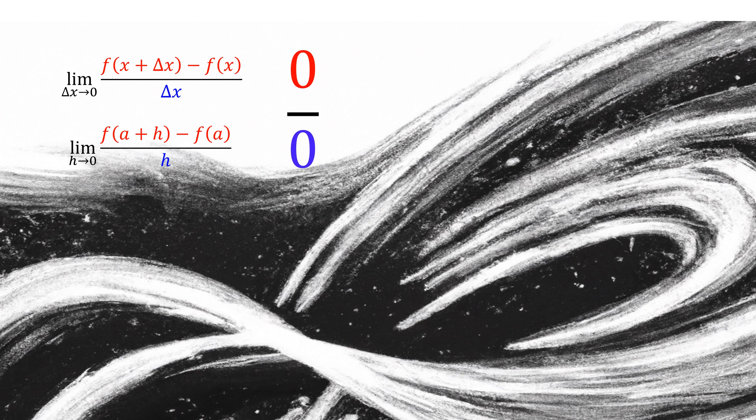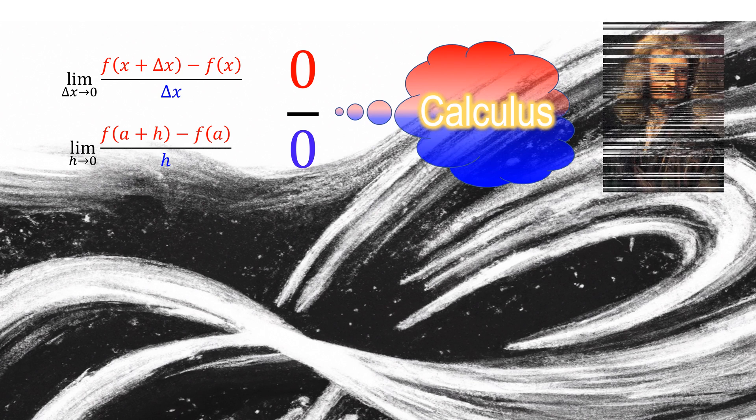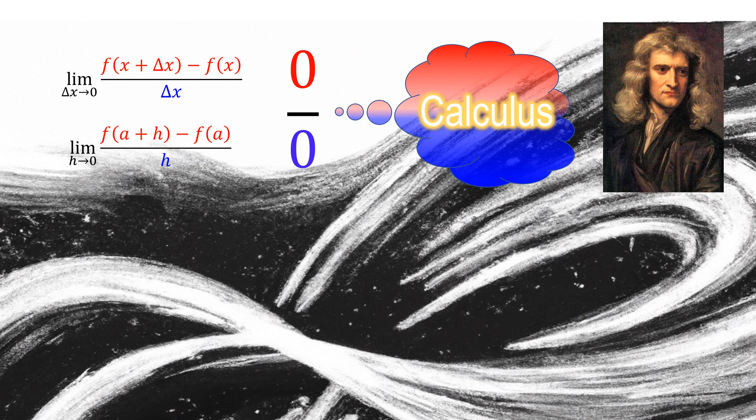So the solution to 0 divided by 0 gave us calculus. The question is, what can infinity equal to infinity give us? Can this new indeterminate form help us to invent a new mathematical tool to prove the Riemann hypothesis?